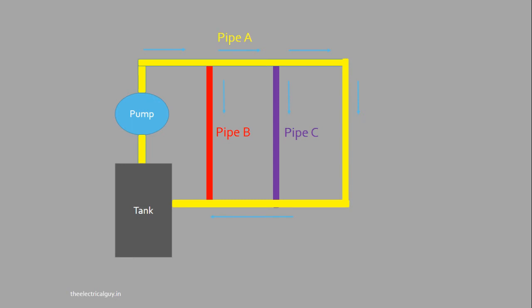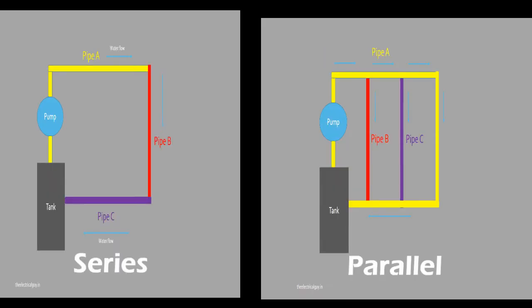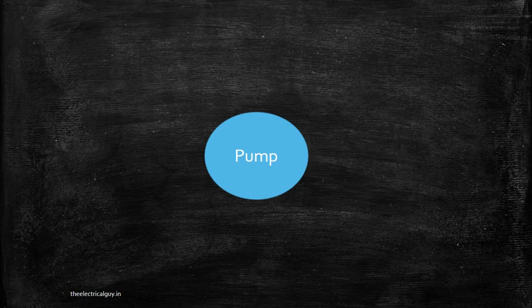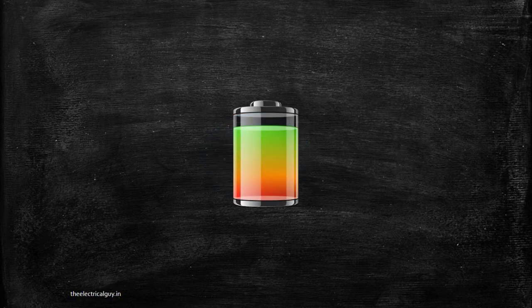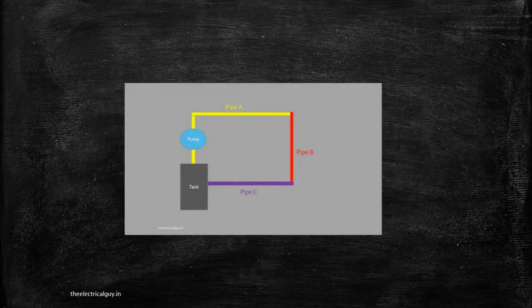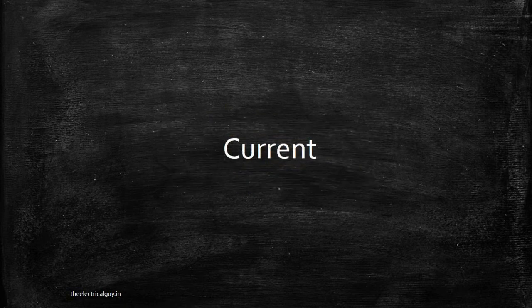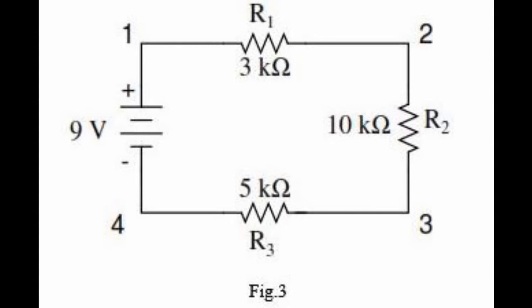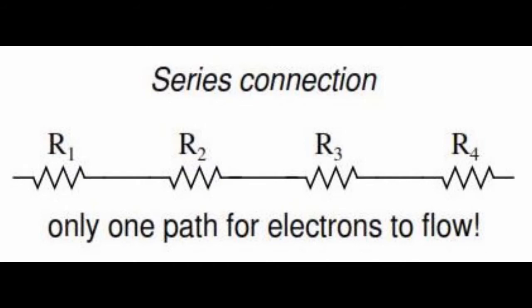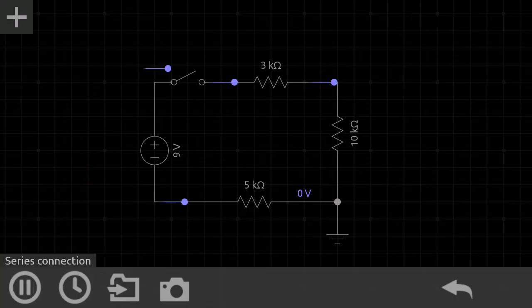If you understood the pump and pipe example, you have understood 50% of the concept. Now let's get into the detail of series connection. Instead of a pump we have a battery, instead of pipes we have resistors, and instead of water, current is flowing. If resistors are connected end to end, it is called a series connection.